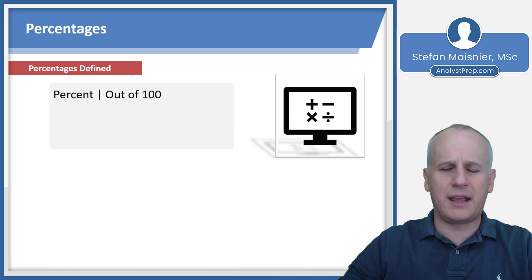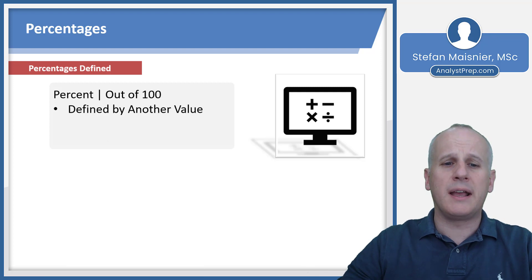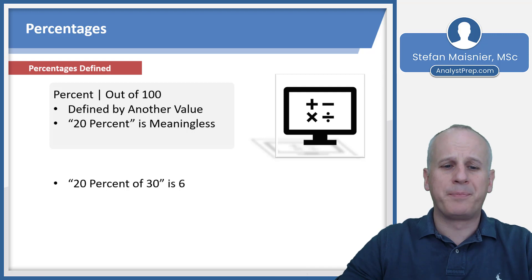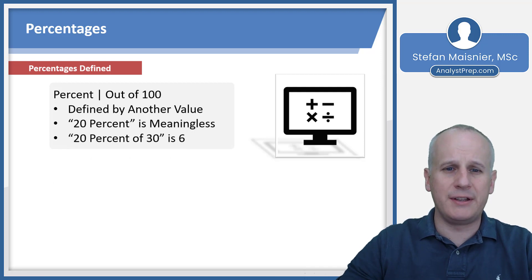It literally comes from the French per cent, which means out of 100 - per meaning out of, cent meaning 100. A percent is always defined by another value, so the phrase 20 percent is ultimately meaningless without a comparison factor. But 20 percent of 30 is 6.